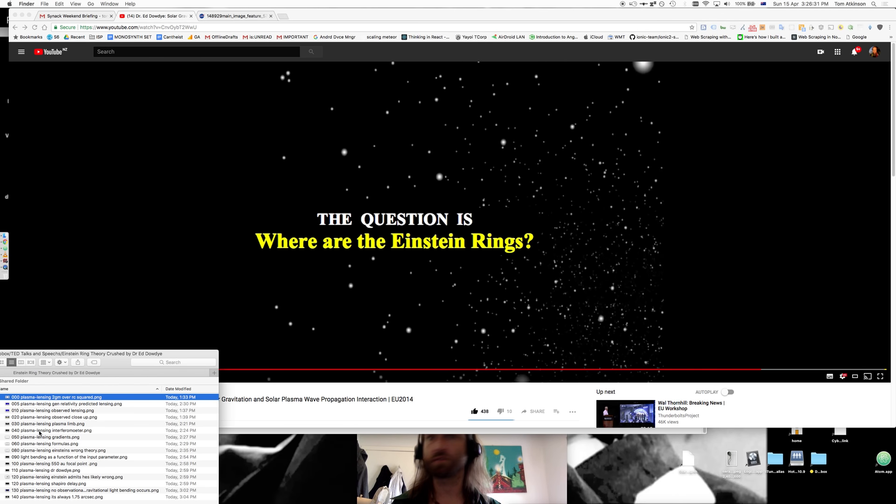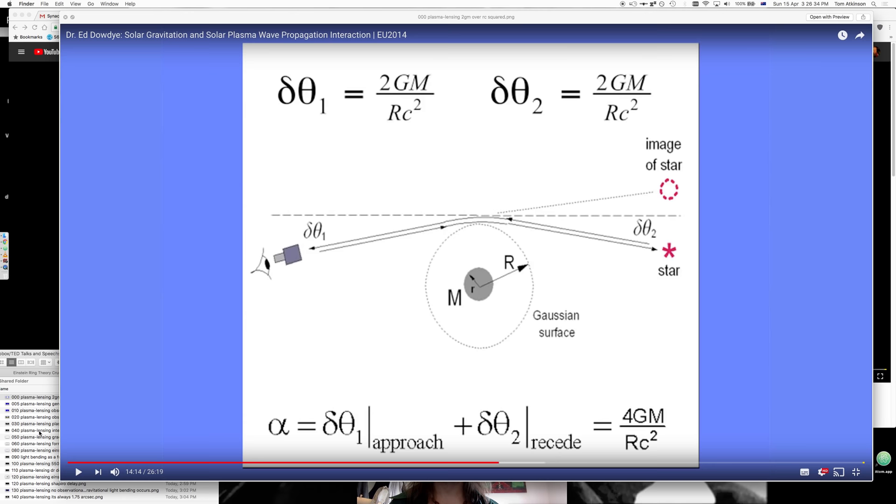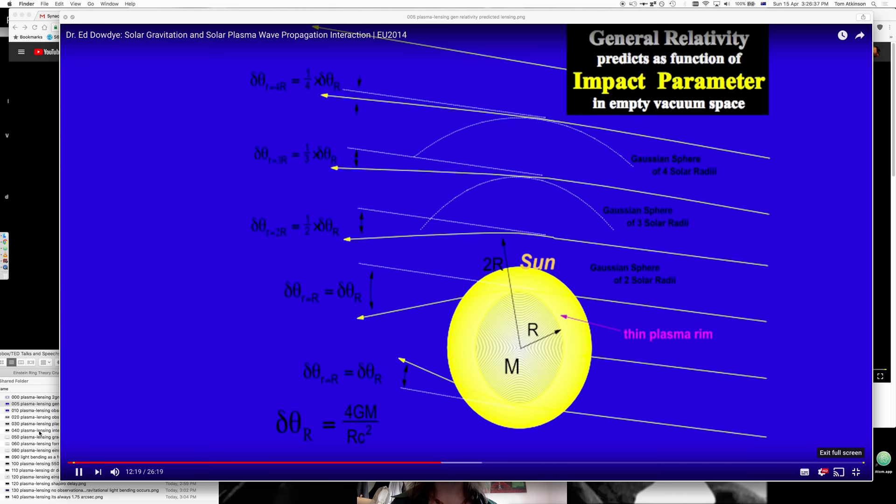By Dr. Ed Doughty. So, Mr. Ed has discovered Einstein's theory of solar lensing is wrong. Here it is. You can see the bending of light toward the sun as it passes. It's wrong.